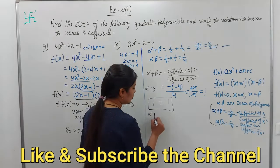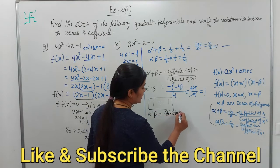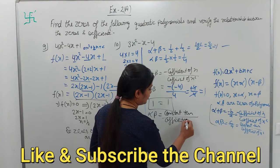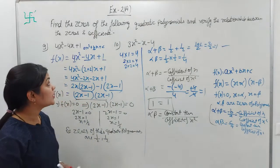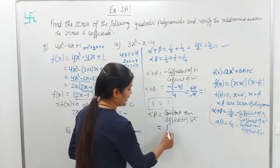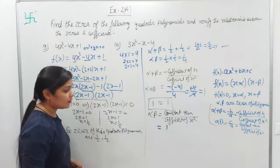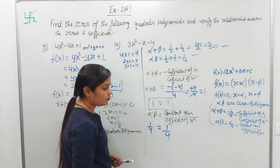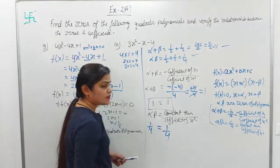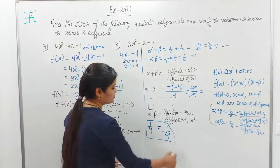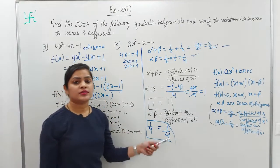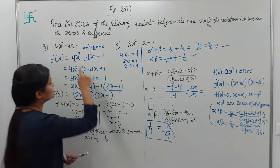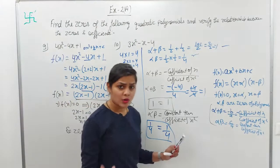Now for the product of zeros: it equals the constant term divided by the coefficient of x². The constant term is 1, and the coefficient of x² is 4, giving 1/4. And when we calculated the product from the zeros, we also got 1/4. So this is verified — the relationship between zeros and coefficients of the polynomial holds. This is how question number 9 is completely solved.